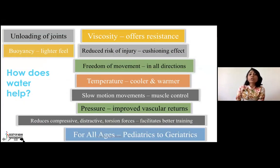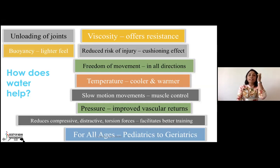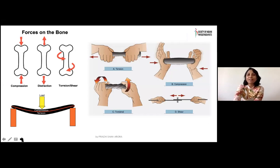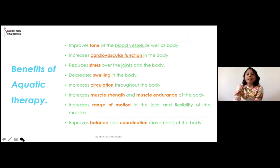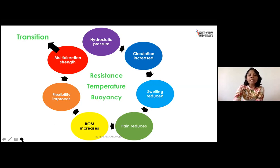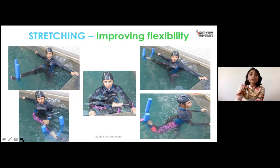Fibromyalgia cases treated in water show good improvement — fascia is stretched well, range of motion and flexibility are achieved without excessive compressive forces. To clarify the poll: ground reaction forces are higher on land, not in water, and are substantially reduced in the aquatic environment. The four key unique features of aquatic therapy — hydrostatic pressure, resistance, temperature, and buoyancy — differentiate it from land therapy and facilitate easier progression. For example, achieving hip flexibility stretches that are difficult on land becomes much easier due to buoyancy assisting the movement.